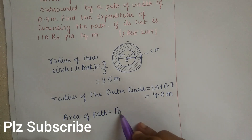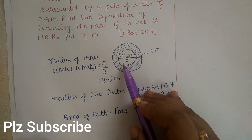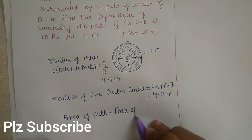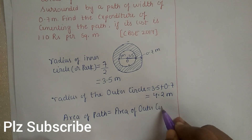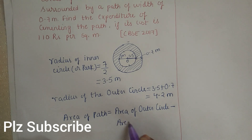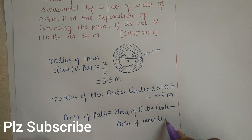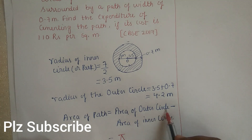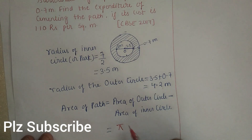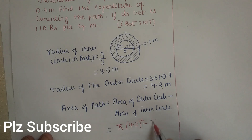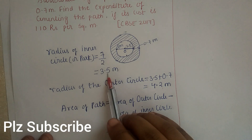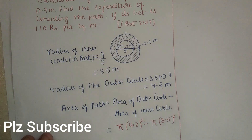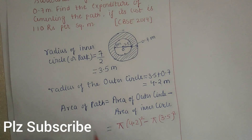To find the area of the path, we subtract the area of the inner circle from the area of the outer circle. Area of path = area of outer circle minus area of inner circle. Area of outer circle = π r² = π × (4.2)². Minus area of inner circle = π × (3.5)². This gives us the area of the path.